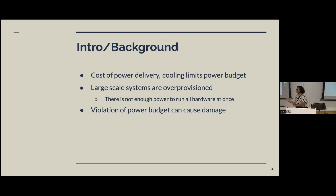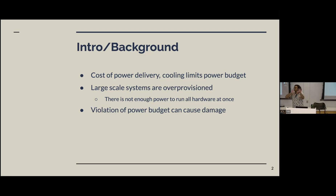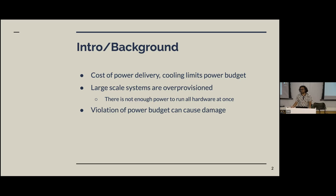Secondly, data centers, cloud vendors, all these things, they like to over-provision. In other words, there's more hardware than could be powered simultaneously at maximum capacity. The reason for this is that they can do workload movement and things like that, but as a result, if power budgets are violated, we violate cooling constraints and could potentially damage hardware, among other things. So sticking to power budgets assigned to data centers is extremely important.